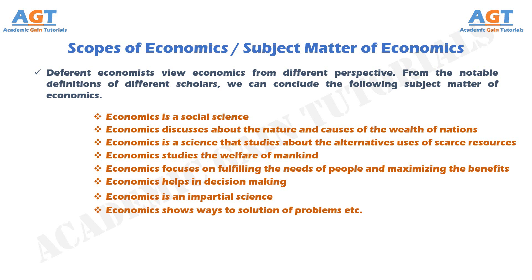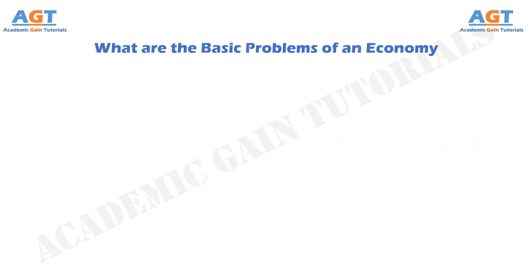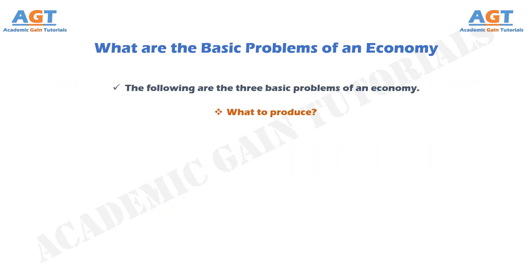Now that we know why we should study economics and what the subject matter of economics is, let's look into the basic problems of an economy. The following are the three basic problems of an economy. The first is: what to produce. This problem can be divided into two related questions — which goods are to be produced and which not, and in what quantities those goods are to be produced. If productive resources were unlimited we could produce as many goods as we liked, and therefore the question would not arise. But because resources are scarce relative to human wants, an economy must choose among different alternative collections of goods and services to produce.